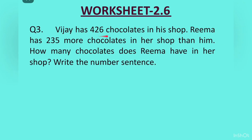Question 3. Vijay has 426 chocolates in his shop. Rima has 235 more chocolates in her shop than him. How many chocolates does Rima have in her shop? Write the number sentence.